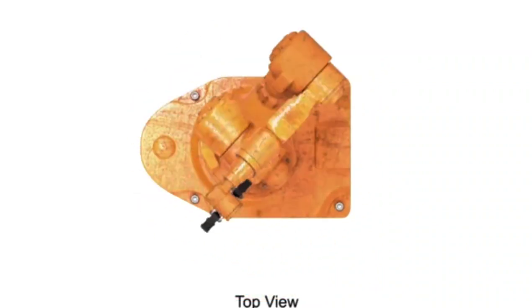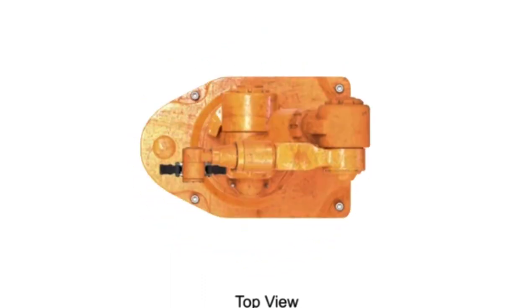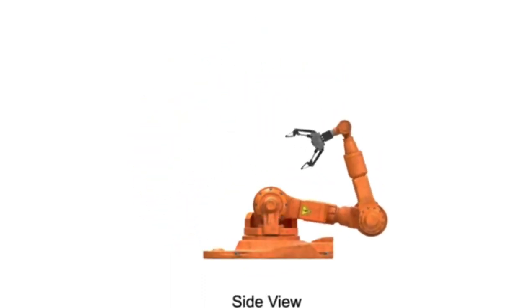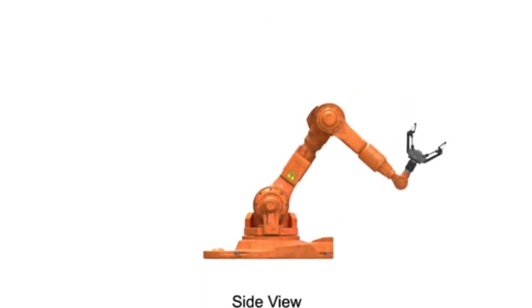This robot rotates at the waist, bends forward and back at the shoulder, and moves vertically at the elbow.